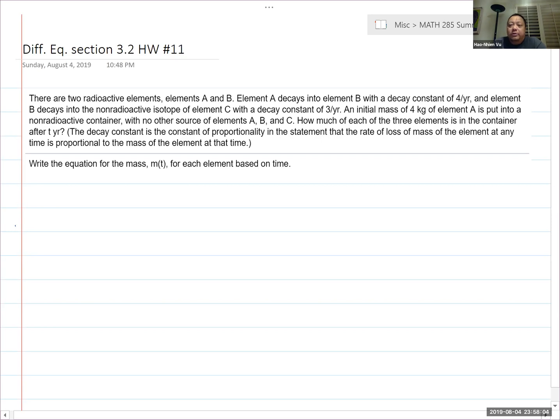At the beginning you have four kilograms of A and it's slowly decaying to B. As soon as B appears, it simultaneously decays into C and C is a non-reactive isotope, so it doesn't decay anywhere. And they explain to you what the decay constant is. The decay constant is a constant of proportionality, so it's going to be the letter K.